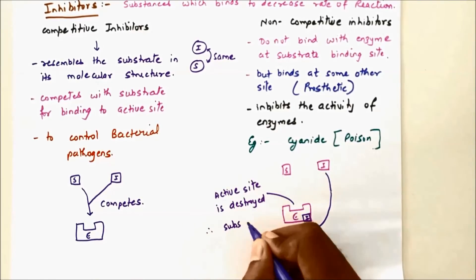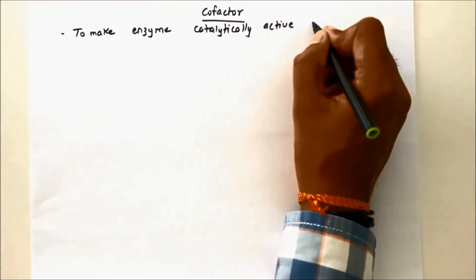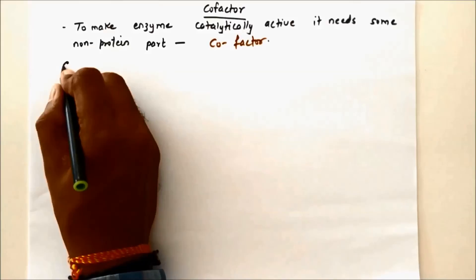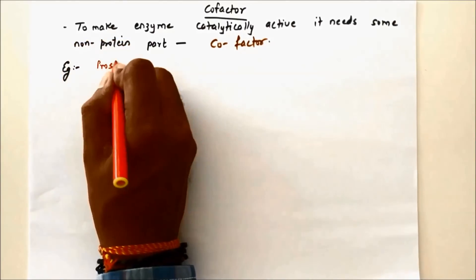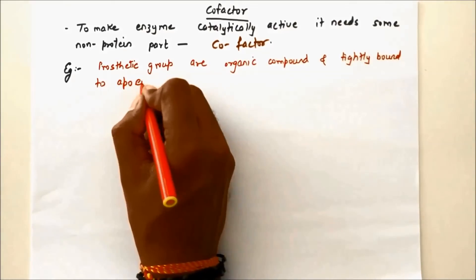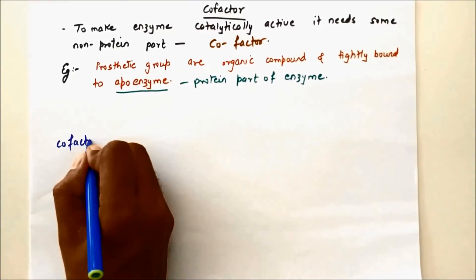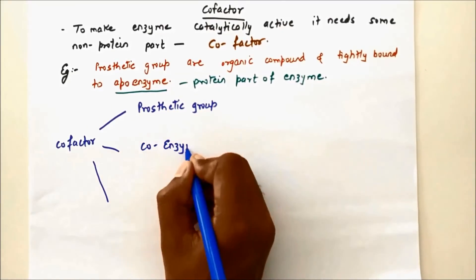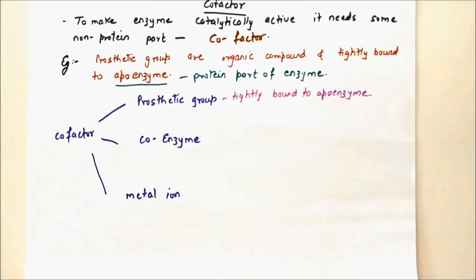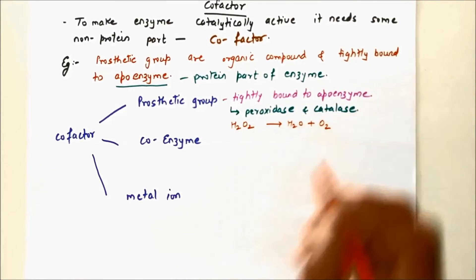The word cofactor refers to a non-protein part needed to make an enzyme catalytically active. Examples of cofactors include: prosthetic groups (organic compounds tightly bound to the apoenzyme), coenzymes, and metal ions. The apoenzyme is the protein part of the enzyme. Together these three components make up the cofactor.